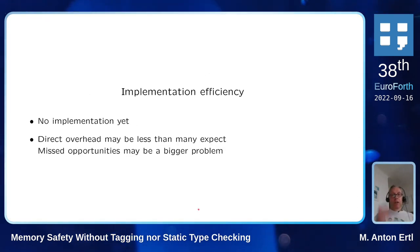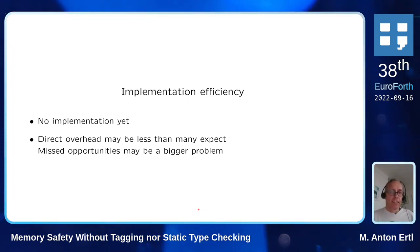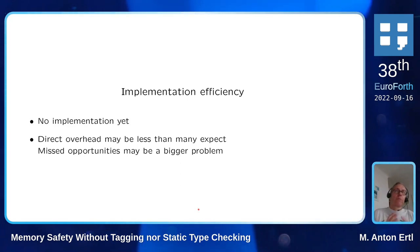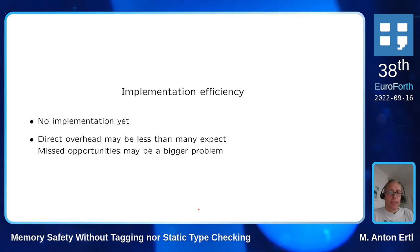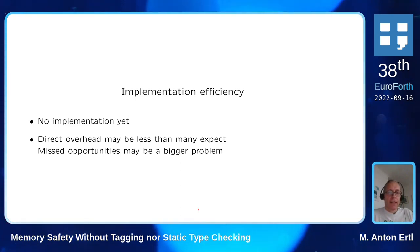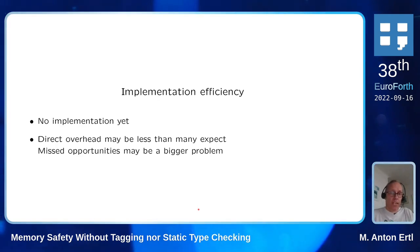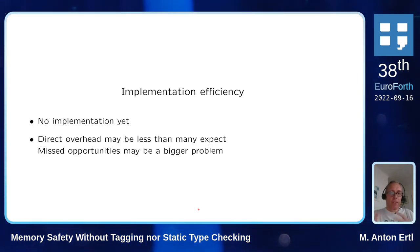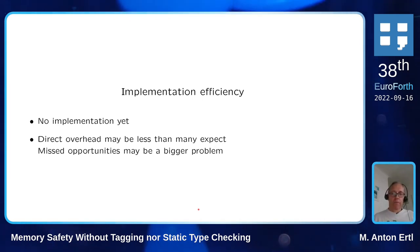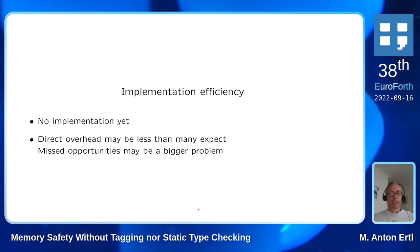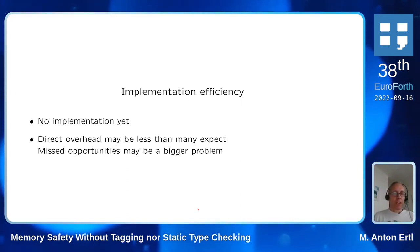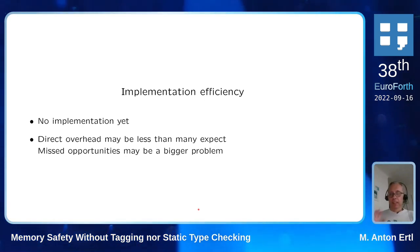On implementation efficiency: I can't give numbers yet, but from what I've looked at I expect less direct overhead than I initially expected — and probably less than many would expect. I think the bigger problem for efficiency is not direct overhead but the missed opportunities: things you can do in a memory-unsafe way that you cannot do in a memory-safe language, even if you eliminate direct overhead completely.